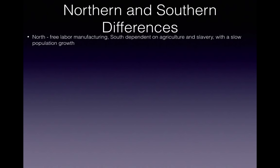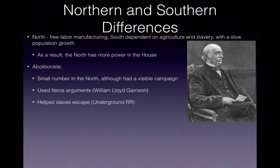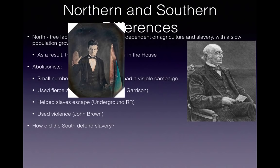Let's jump to northern and southern differences. The North had free labor manufacturing, and the South was dependent on agriculture and slavery. They had very slow population growth because people were not moving to the South to compete with slavery. As a result, the North had more power in the House, which is why the Wilmot Proviso passes the House but not the Senate. Abolitionists begin to emerge — they were a minority in the North but had a visible campaign. William Lloyd Garrison wrote his weekly newspaper The Liberator. They also helped slaves escape via the Underground Railroad, and they used violence — think of people like John Brown.